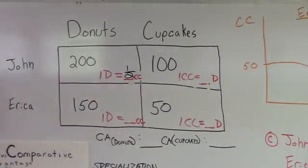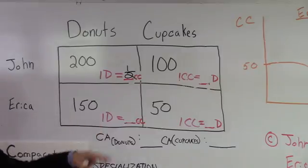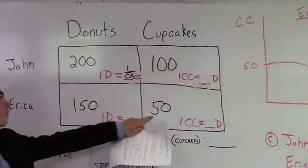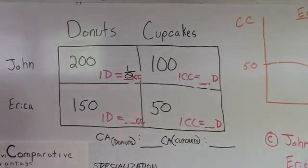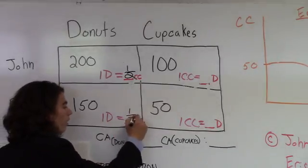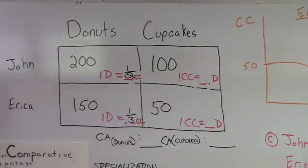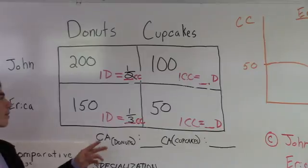And, we'll do the same thing down here with Erica. So, to produce one donut, she's giving up 50 over 150 to make one-third cupcakes. So, do the same thing with cupcakes.